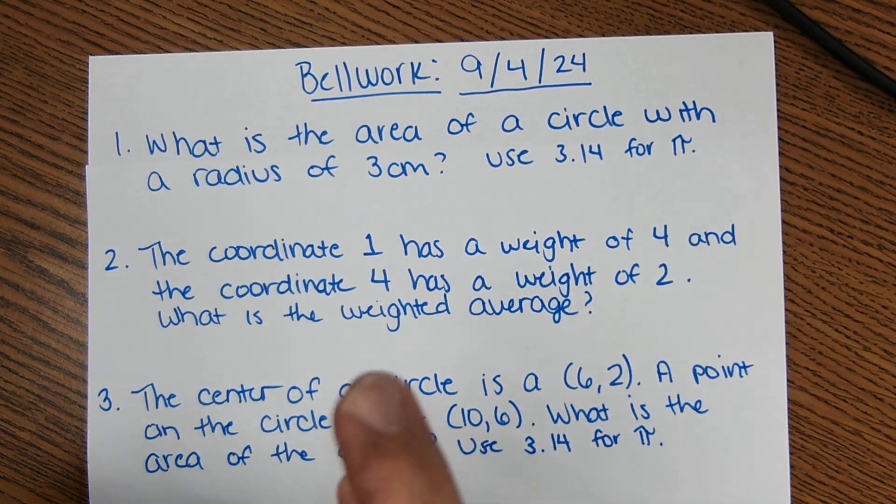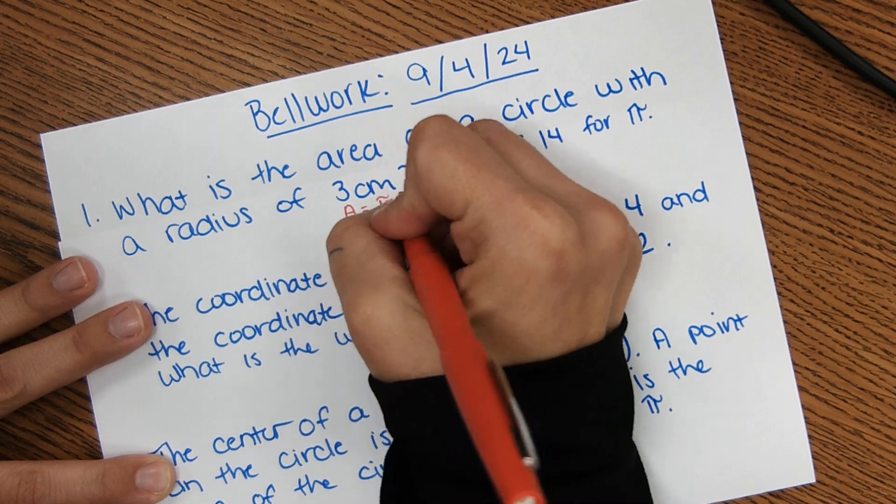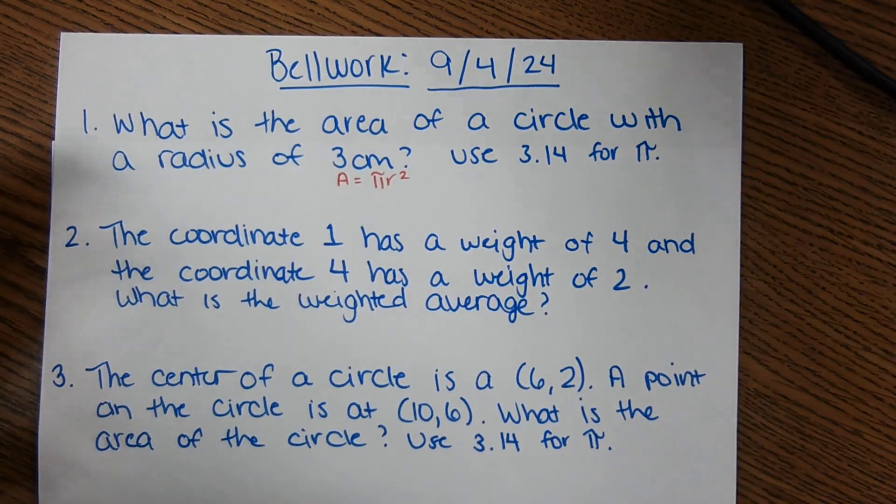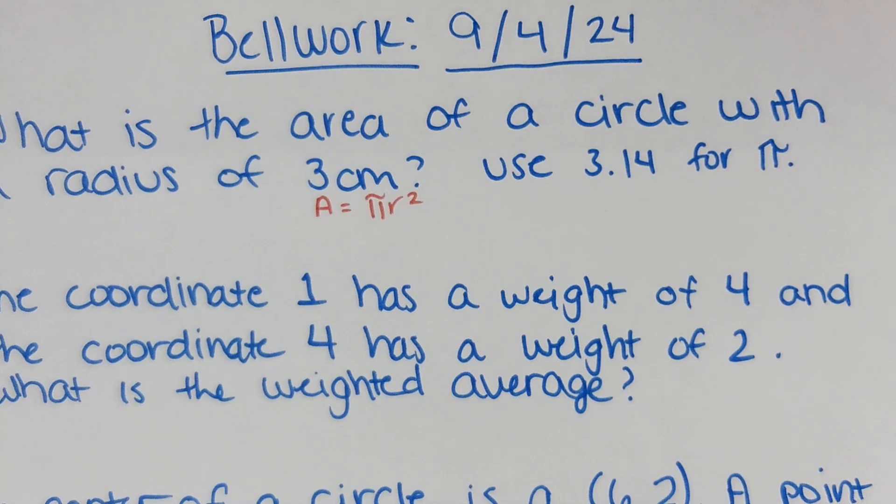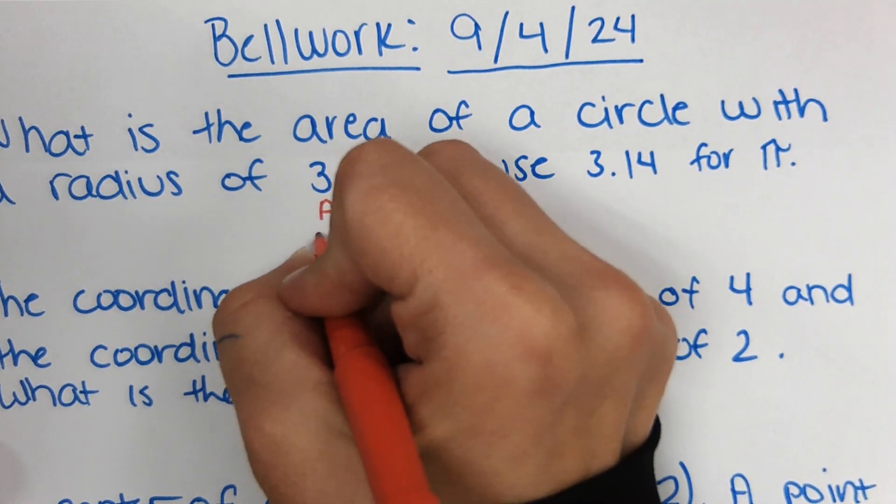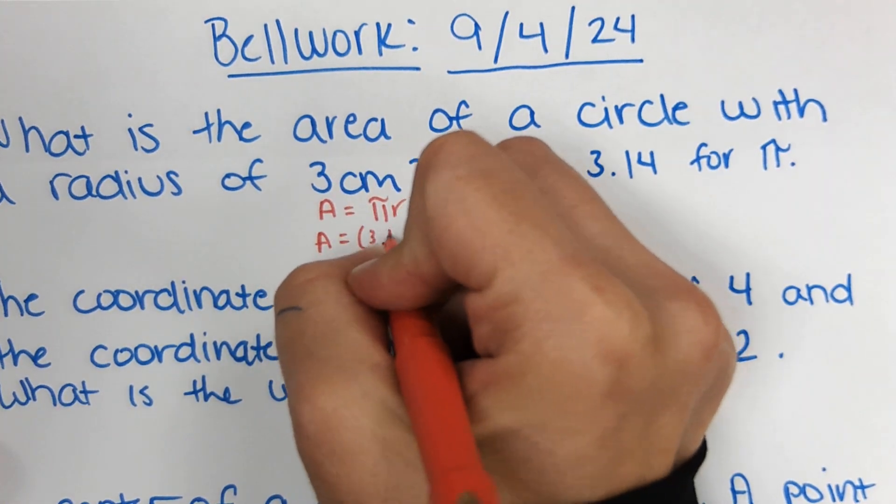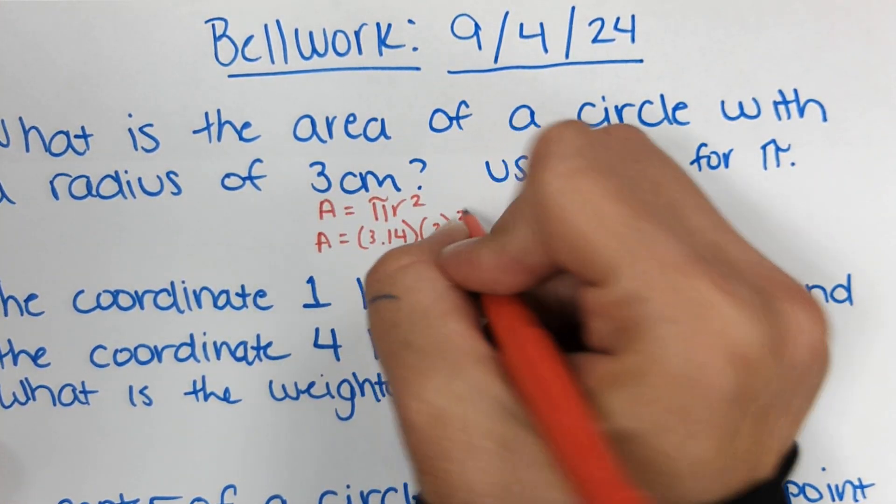So the first thing that you would do is just write down the equation. So A equals pi r squared. I'm gonna zoom in, because I know that's gonna be hard to see. Okay, so that's the equation. It says to use 3.14 for pi. So we're gonna say A equals 3.14. And then the radius is three, so it'd be three squared, like that.